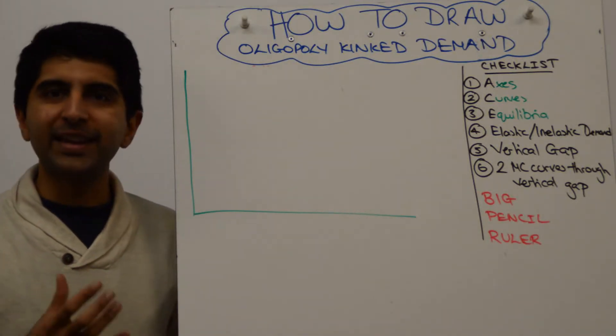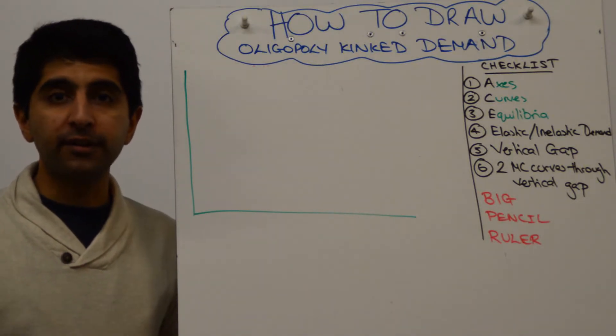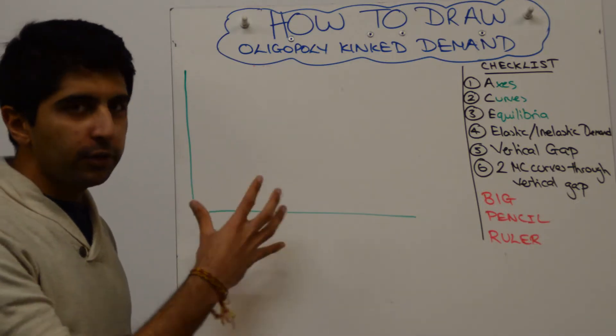Hi everybody! You want to construct the kinked demand curve to show rigid prices in oligopoly. How do you construct the diagram?